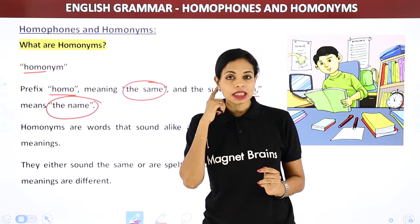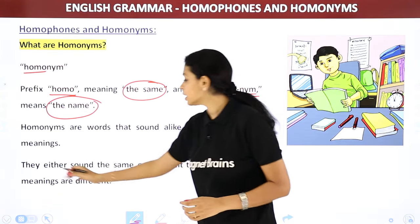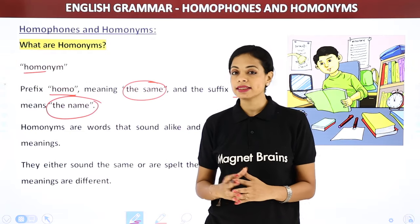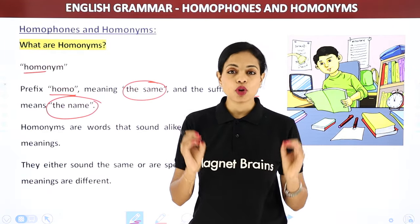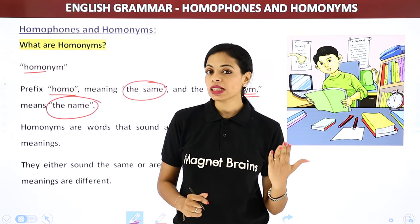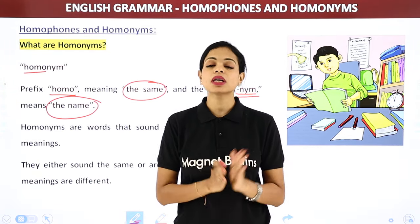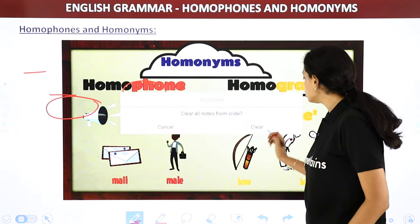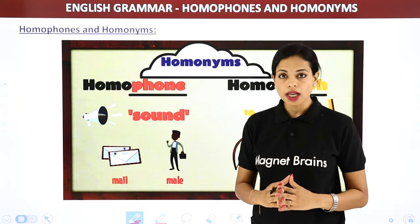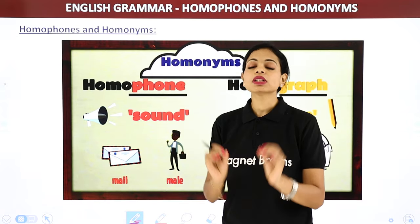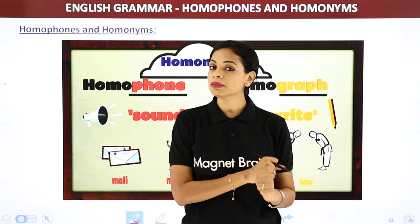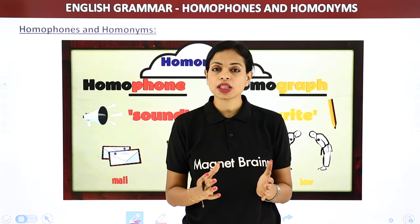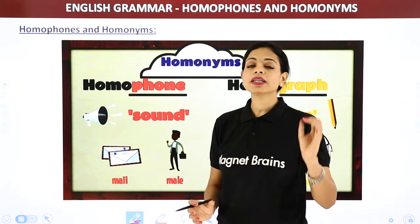Homonyms are words which either sound the same or are spelled the same, but their meanings are always different. They either sound the same or are spelled the same, but their meanings are different. Are we clear with this? Now let's understand how many types homonyms have.